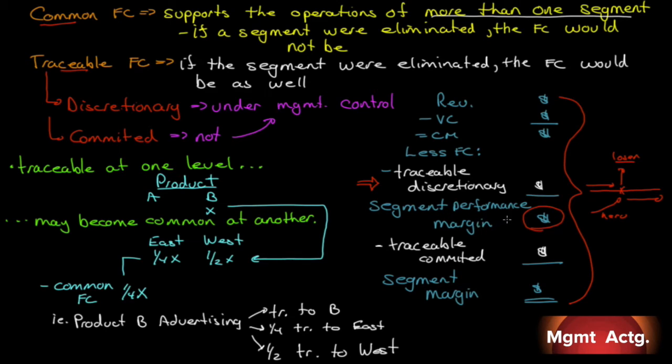So, you get it. It is our contribution margin less our traceable discretionary costs, fixed costs, to get us to the segment performance margin. From that, we'll take off the traceable committed, and we end up with our segment margin. And that's as far as we go in the segment. We move over in the contribution margin, continue down under the total column. Then, that's where our common fixed costs would be. Let's move over to my green writing here.